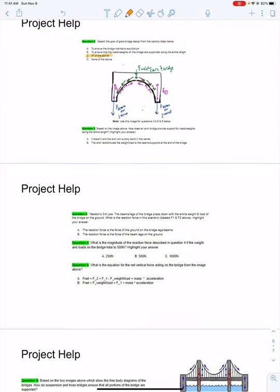Based on the image above, how does an arch bridge provide support for the loads and weights along the entire length? Option A: It doesn't, and the arch will quickly bend in the center. That's not correct. Option B: The arch redistributes the weight/load to the beams and supports at the end of the bridge. That's exactly correct.